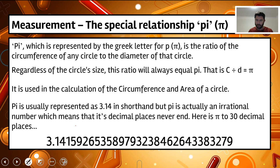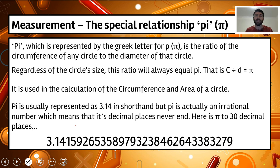So how do we actually calculate the perimeter of a circle? We need to know this special number in mathematics called pi, represented by the Greek letter. It's a ratio of the circumference of any circle to the diameter of that circle. No matter what size the circle, the ratio is always the same and always equals pi — so circumference divided by diameter equals pi. Pi is used in both calculations of circumference and area.